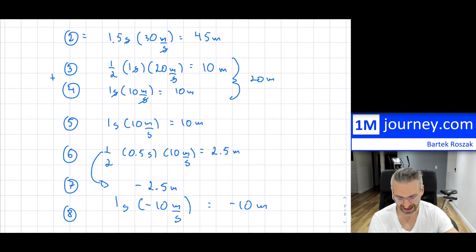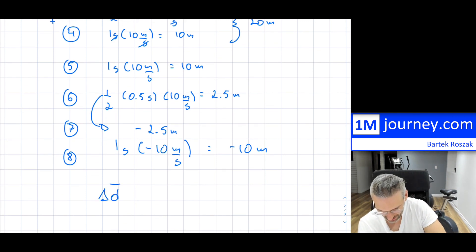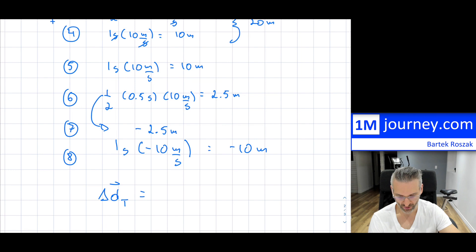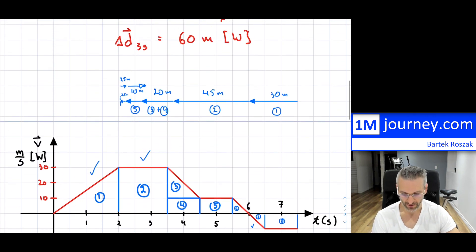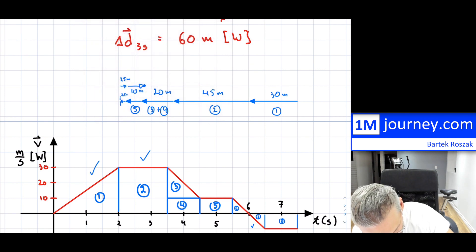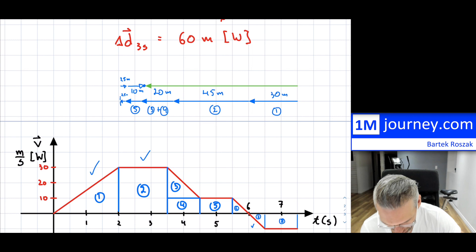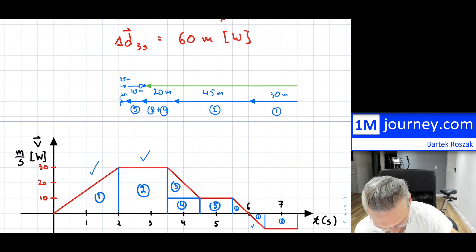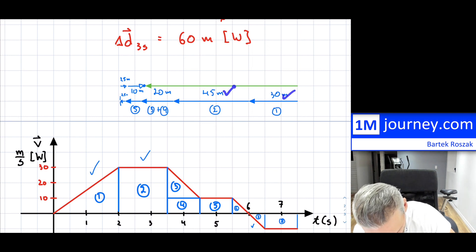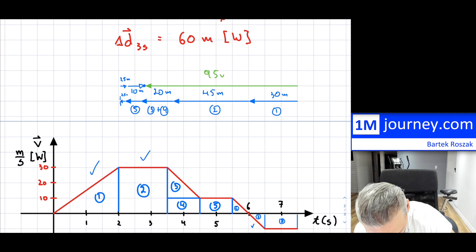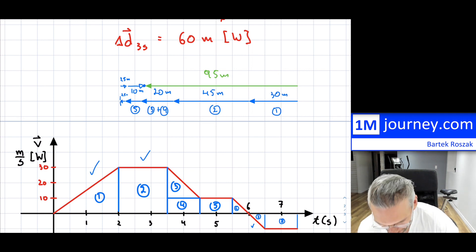You can now add all of these up together and get the total displacement. So: 30 plus 45 plus 20 — that's 95. Then you add 10 plus 2.5 minus 2.5 and minus 10.